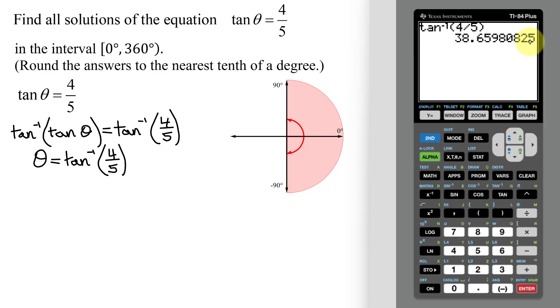And here's my answer. And remember, I need to round it to the nearest tenth of a degree. That's the position of the six. The five is going to round this six up. So my answer, theta, is going to equal 38.7 degrees. And that is one solution to this equation.